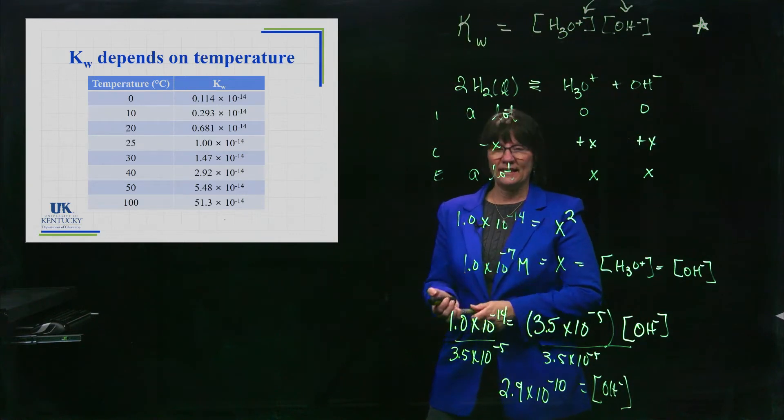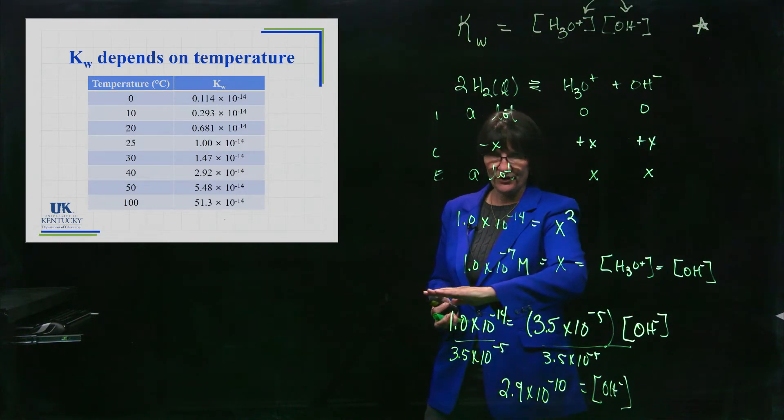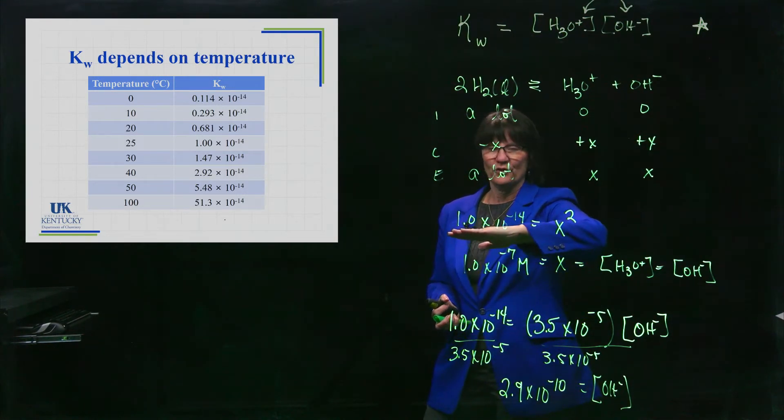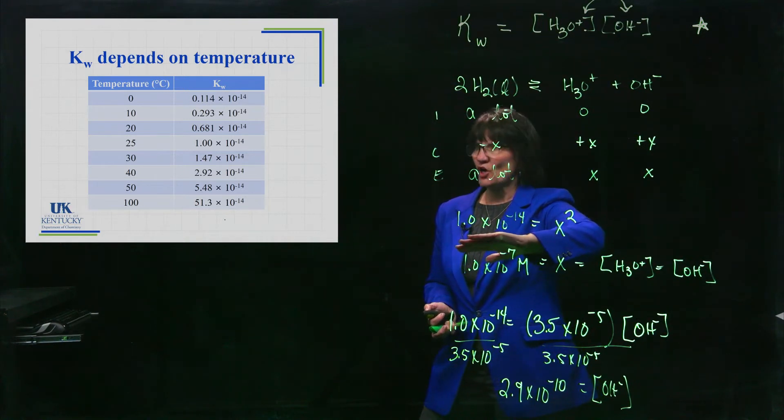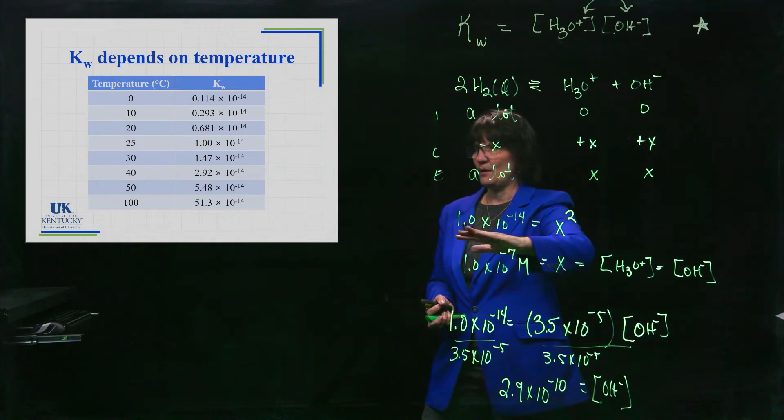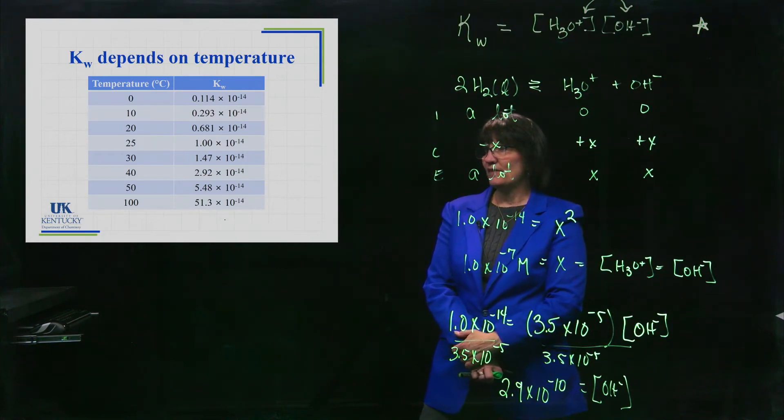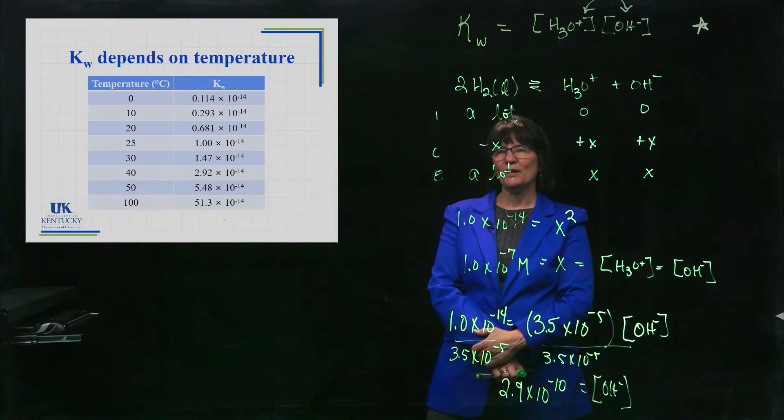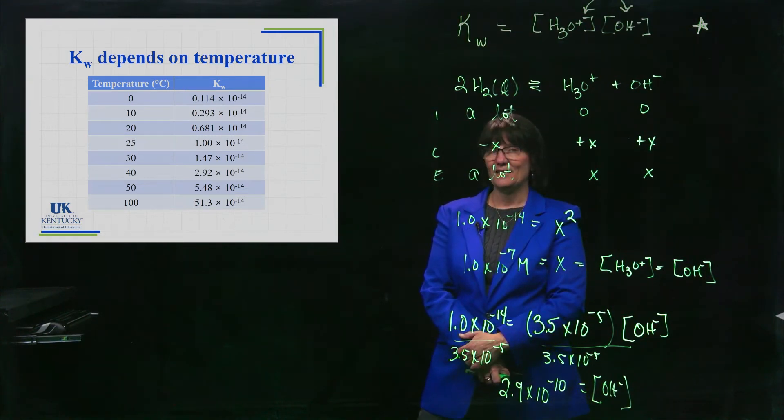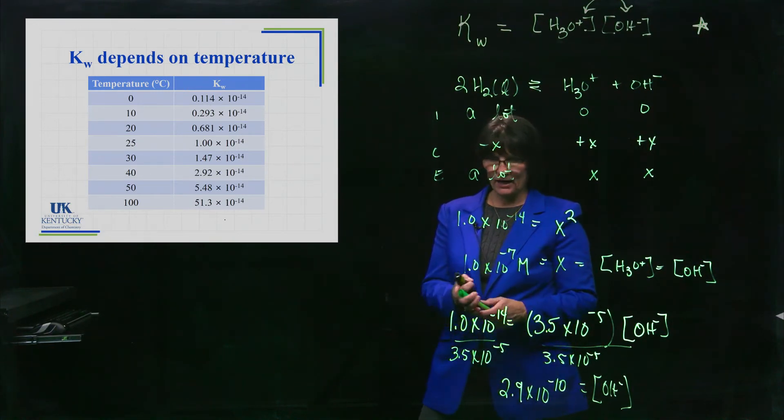Now, I said that KW is equal to this number. Right there. Equals to this number, but that's only when it's at 25 degrees Celsius. When it's at 25 degrees Celsius, it's that number. Notice it changes. How is it changing? As the temperature goes up, the K value gets bigger. The K value gets bigger, it tells you which way this equilibrium is shifting as the temperature goes up. It's shifting it to the right. That means it's an endothermic reaction.